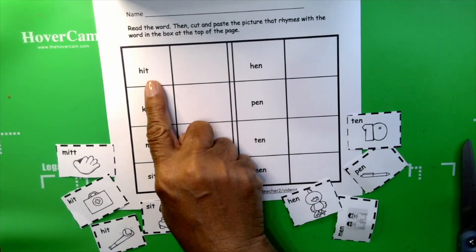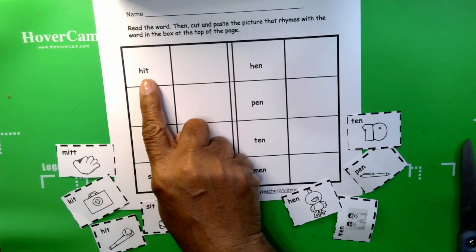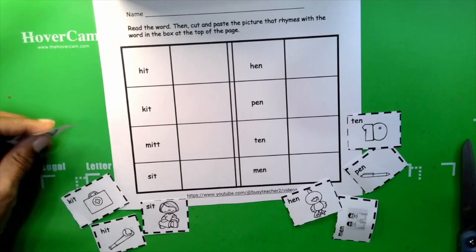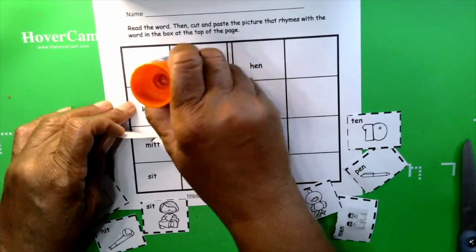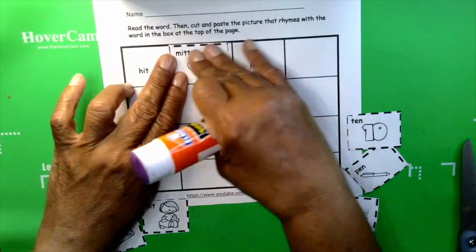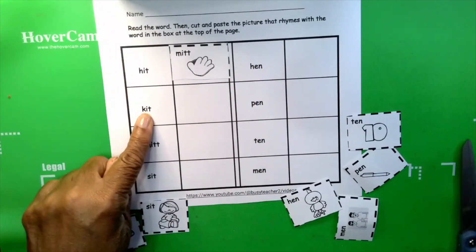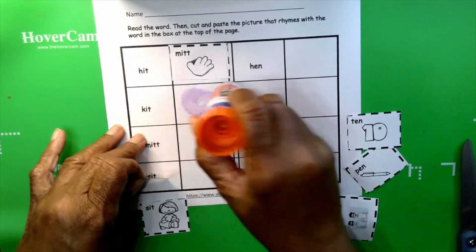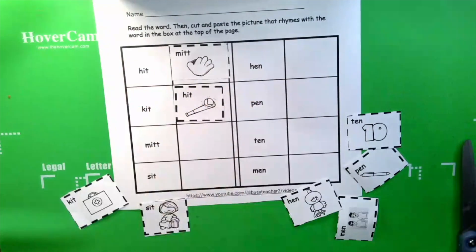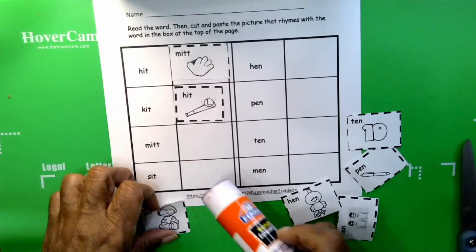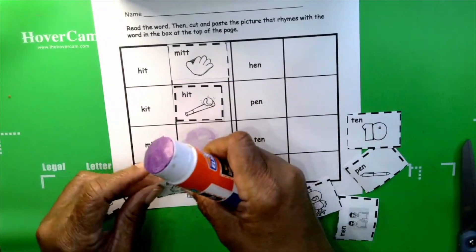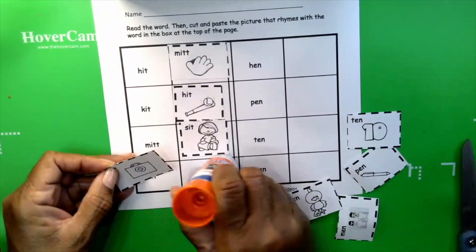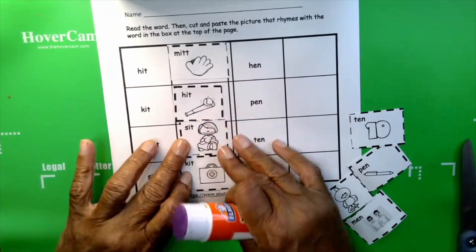Okay, take a look at the first word. Hit, hit, hit. Your turn. Hit. Which word can we use to rhyme with hit? Mitt, that's a good one. Did you find the word, the picture with the mitt? Because hit and mitt are rhyming words. Sit, kit. There we go. We did it.